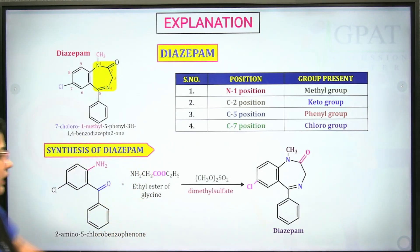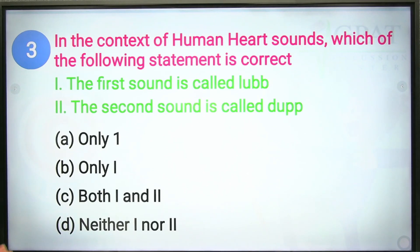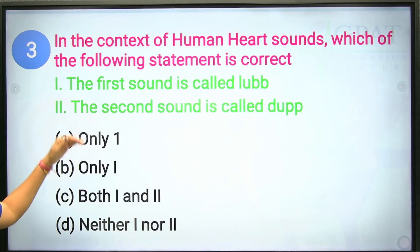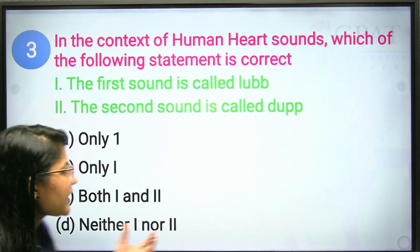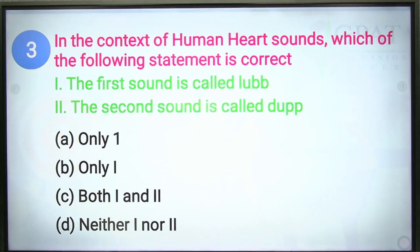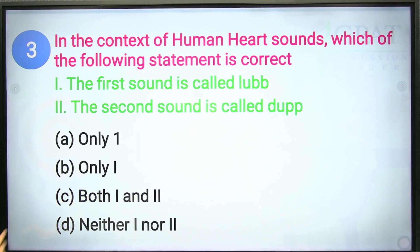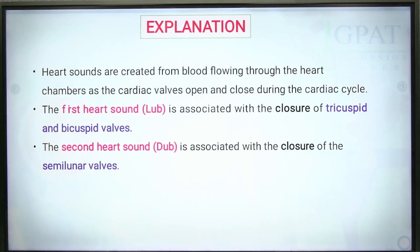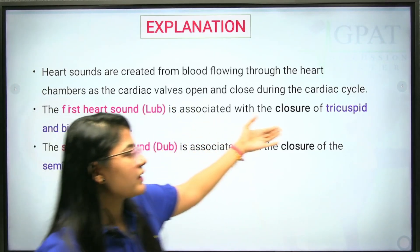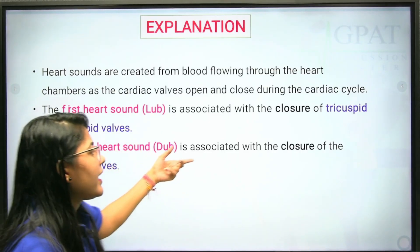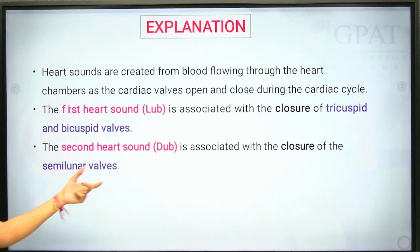Third question: regarding human heart sounds, which statement is correct? Statement 1 — the first sound is called 'lub'; Statement 2 — the second sound is called 'dub.' Both are correct, so option C (both 1 and 2) is the answer. The first sound 'lub' is associated with closure of tricuspid and bicuspid valves; the second sound 'dub' is associated with closure of semilunar valves.